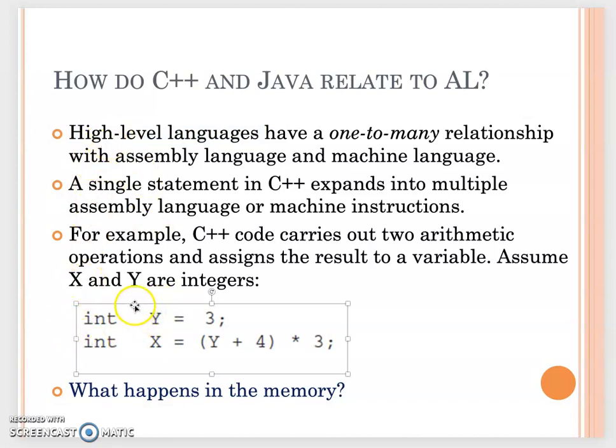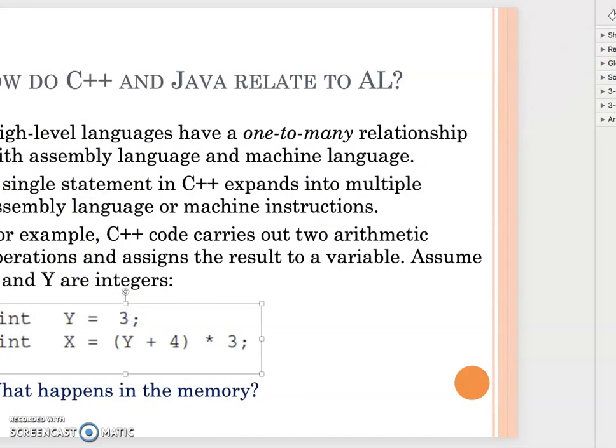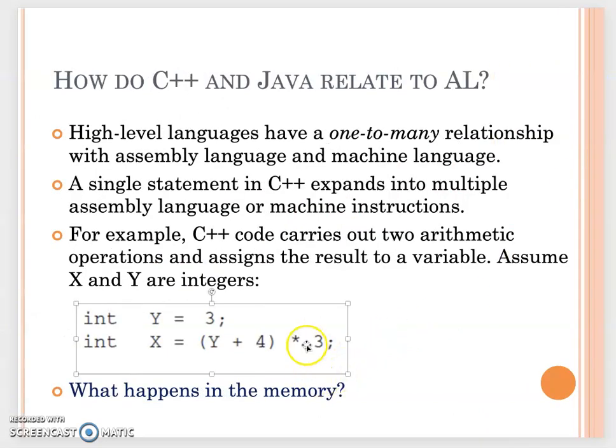That's very typical C++ code, or in Java code we write like this too. You define an integer variable called y. The integer occupies 4 bytes. In these 4 bytes, you assign 3 to that location. Then you define and declare another variable int called x. This x will equal y plus 4 times 3. Of course, y equals 3. 3 plus 4 becomes 7. 7 times 3 becomes 21. So x equals 21. Right, that's what we learned in C++ or Java.